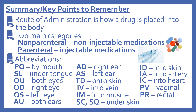Just a little summary and some key points to remember. Route of administration is how a drug is placed into the body. There are two main categories: nonparenteral, which are the non-injectable medications, and parenteral, which are injectable medications. Abbreviations to remember: PO means by mouth; SL is sublingual, under the tongue; OU means both eyes; OD is the right eye; OS is the left eye; AU is both ears; AD is the right ear; AS is the left ear; TD is transdermal; IV is intravenous; IM is intramuscular; SC or SQ is subcutaneous; ID is intradermal; IA is intraarterial; IC is intracardiac; PV is vaginal; and PR is rectal.